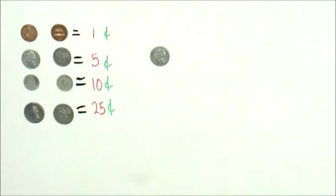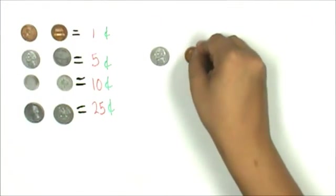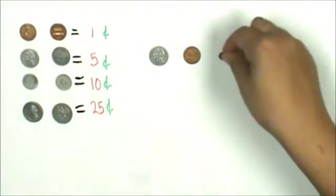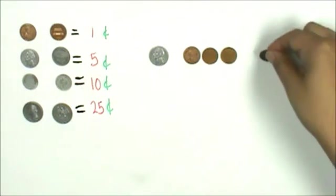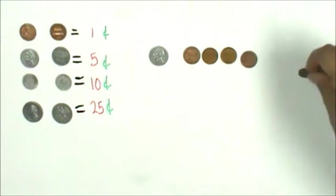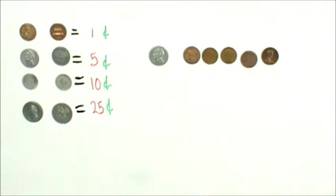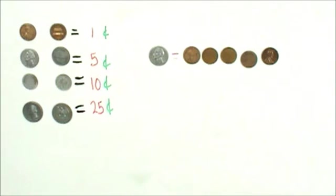I'm going to count my pennies by 1's until I get to 5 cents. 1 cent, 2 cents, 3 cents, 4 cents, 5 cents. 1 nickel has the same value as 5 pennies.